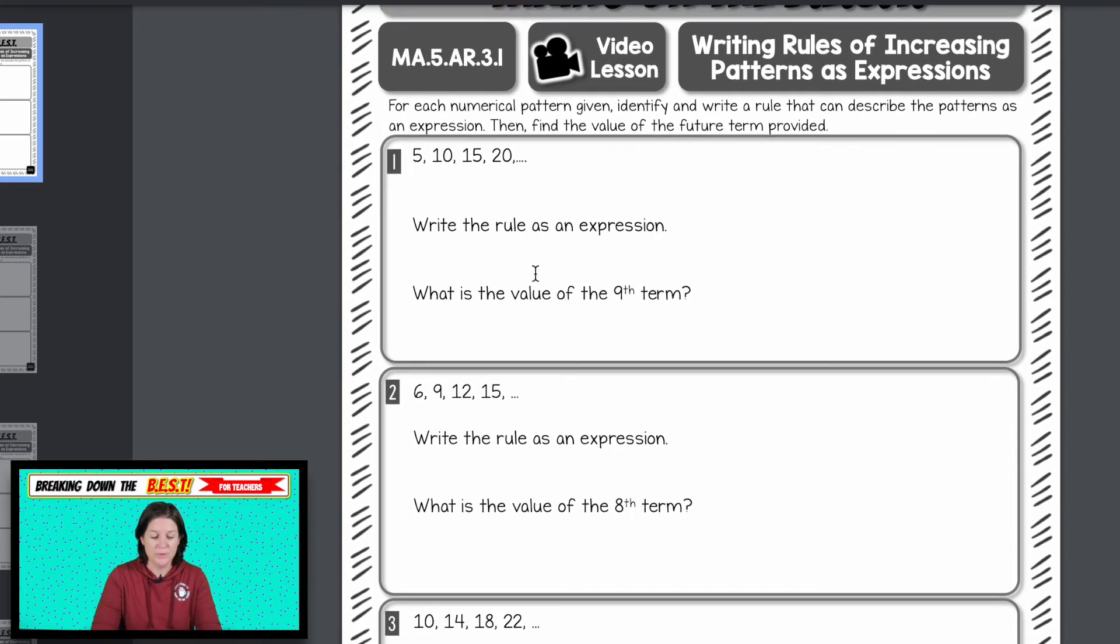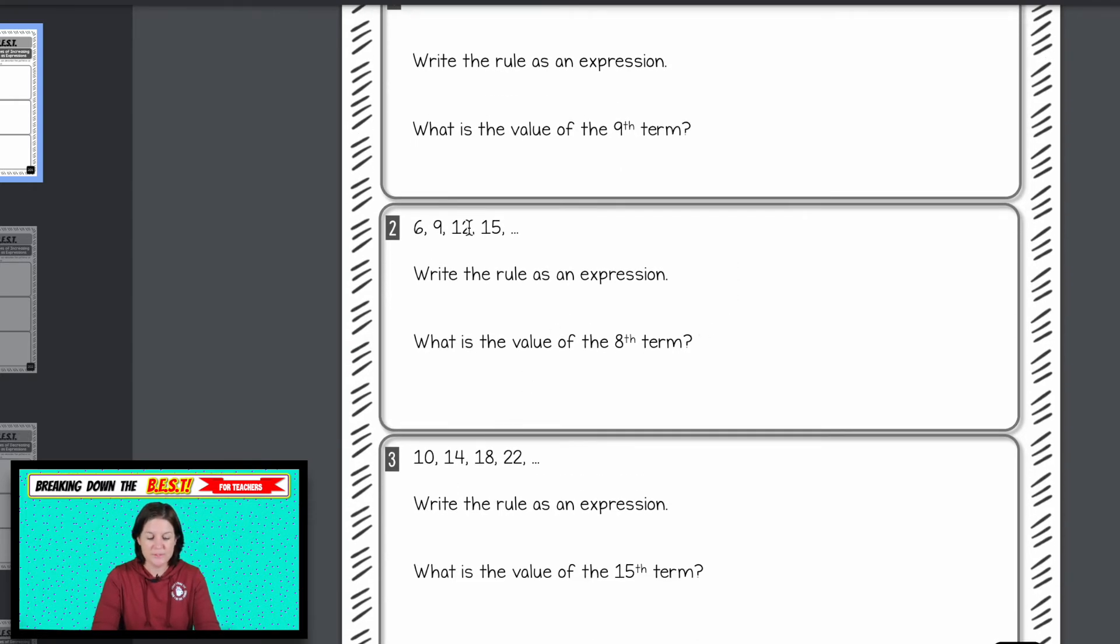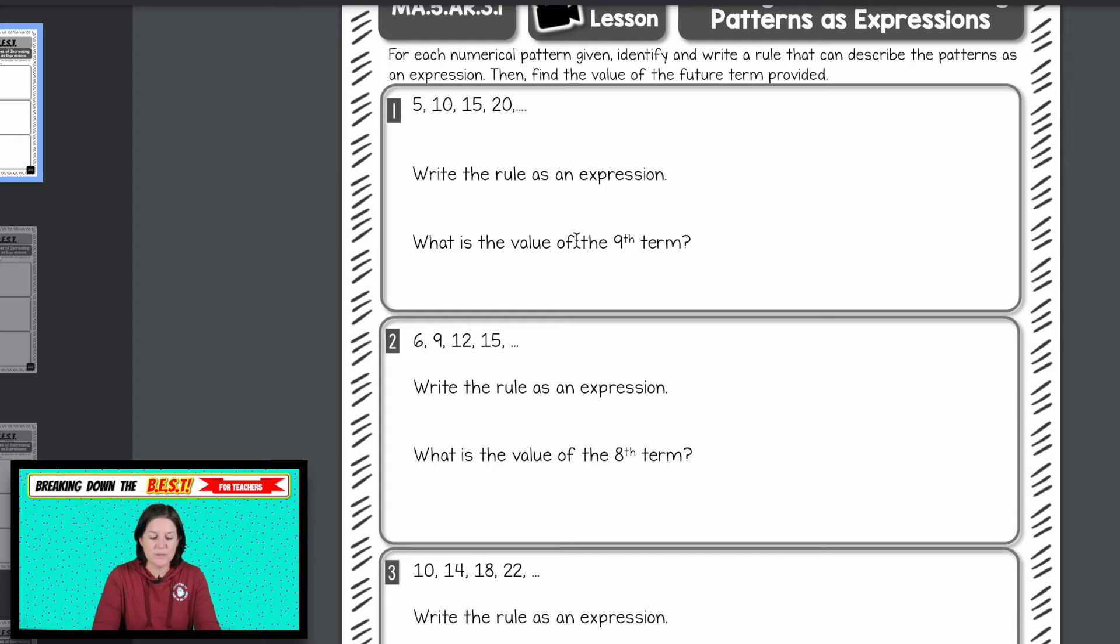Okay, so we have to look at this pattern, write the rule as an expression, and then determine the future ninth term, the value of that. And just keep on going. So it looks pretty simple because we're adding three here. It looks pretty simple because we're adding four. It looks pretty simple. And number one, because we're adding five, but really writing the rule as an expression takes a little bit of trial and error to figure out an expression that will work for any term in the pattern.